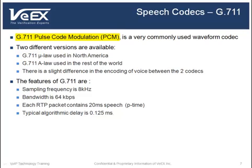The G711 PCM codec is a commonly used waveform codec with two different versions available. The G711 MU law is used in North America and the G711 A law is used in the rest of the world. There is a slight difference between the two codecs in the way speech is encoded. G711 has a sampling frequency of 8 kHz and a bandwidth of 64 kbps. Each RTP packet contains 20 ms of speech, which is its packetization time or P time. The typical algorithmic delay for G711 is 0.125 ms — the time it takes to encode the speech with the codec.